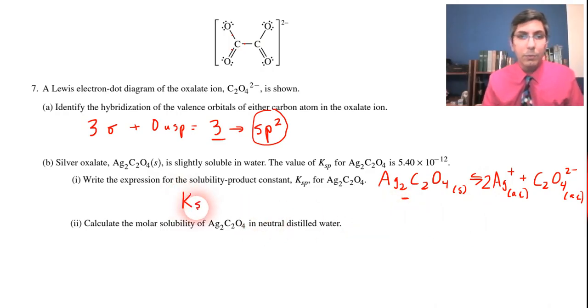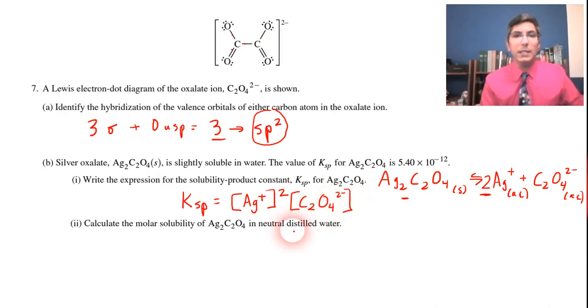So now we can write the equilibrium constant expression for this. Any equilibrium constant expression is just products over reactants, raise the powers of the coefficients, and of course leave out solids and liquids. So that's important in this, because you don't want to have a denominator. It's silver ions squared, because of the two right there, multiplied by the oxalate ion. So when you have that, that is the KSP expression, and that should get you full credit for part one.